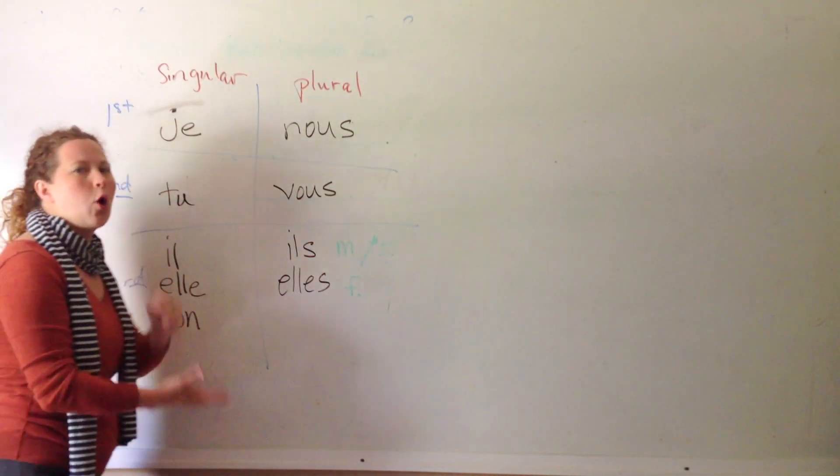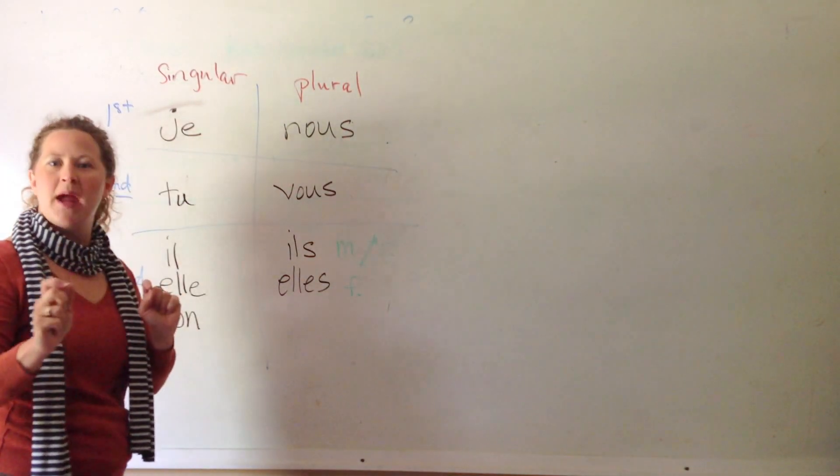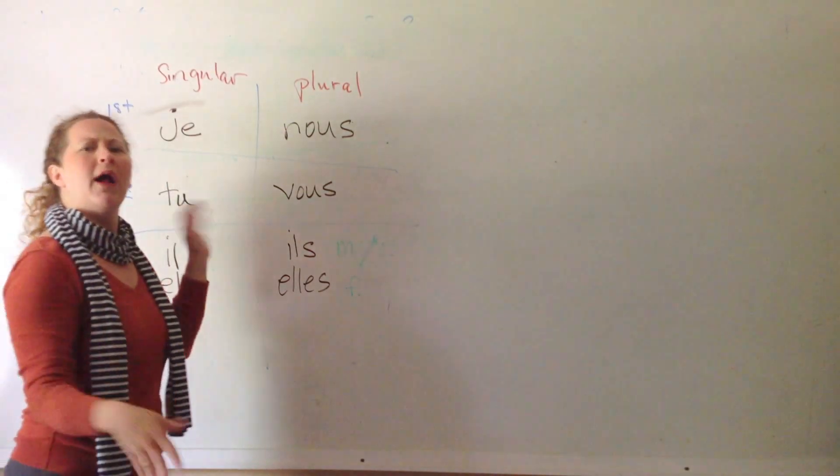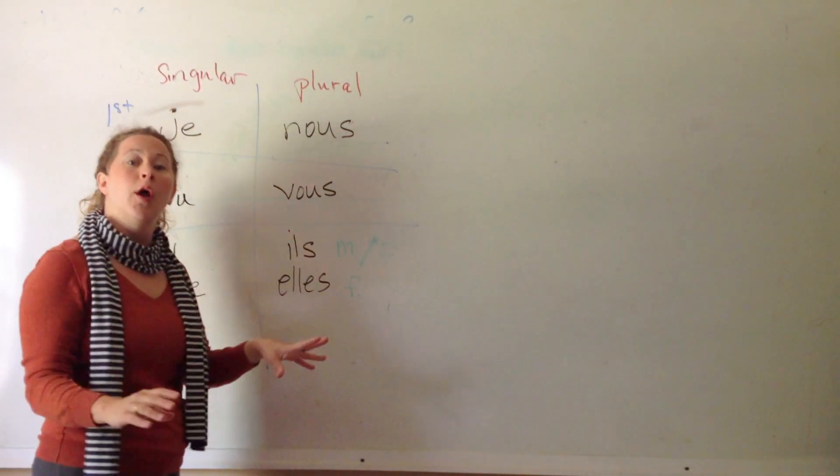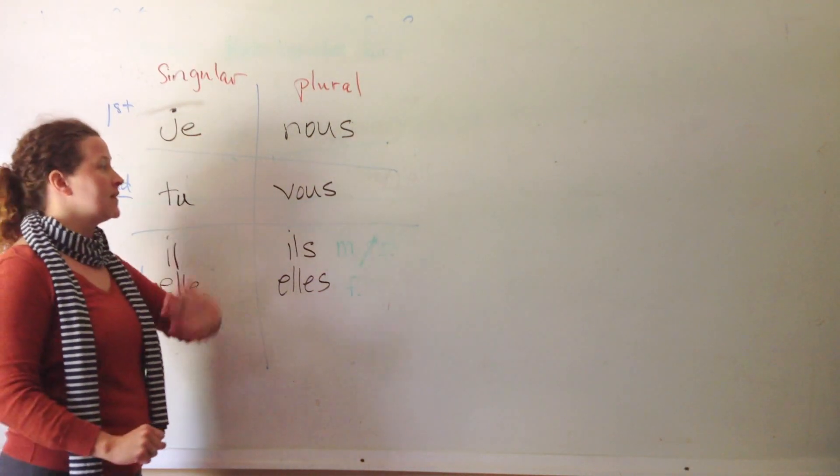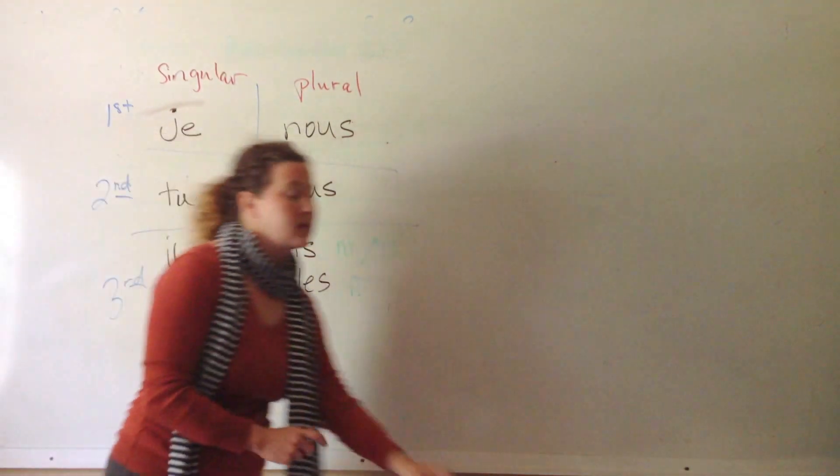This chart must always be set up like this. You cannot change it if you run out of paper or, oh, I'm just going to put this one over here because I ran out of paper or, oh, I like it looking all linear. No. You have to set your chart up like this always. And it will be this way no matter what language you study. So, get a good look at it. This is the chart that you need.